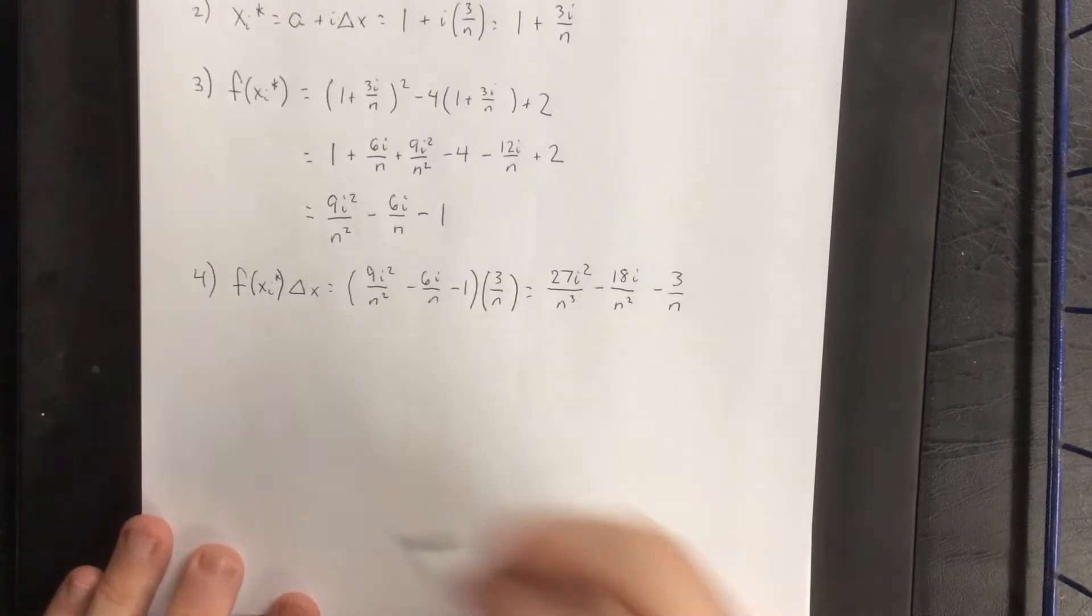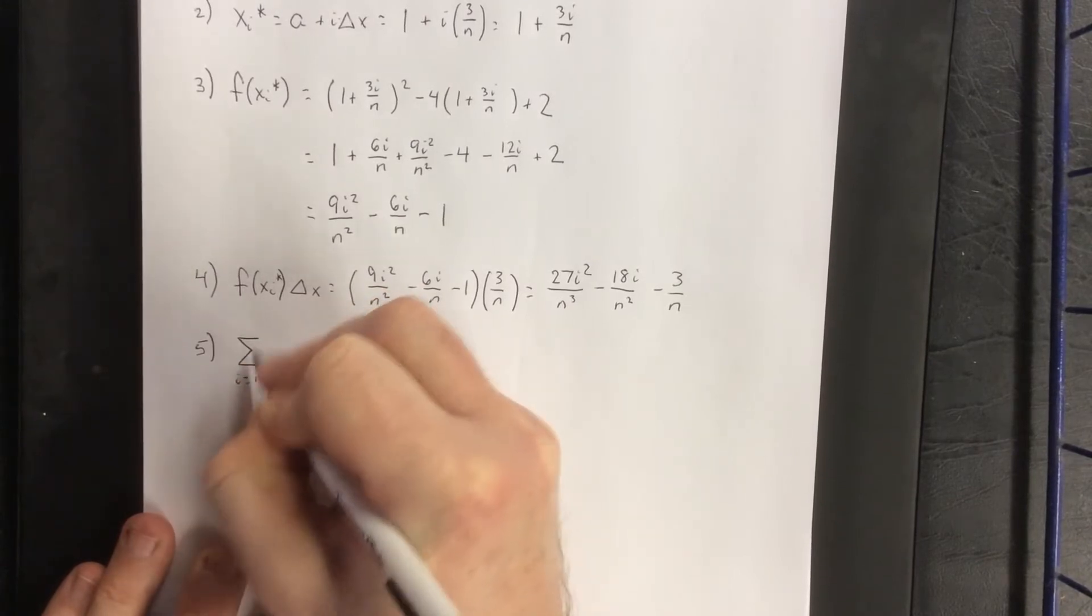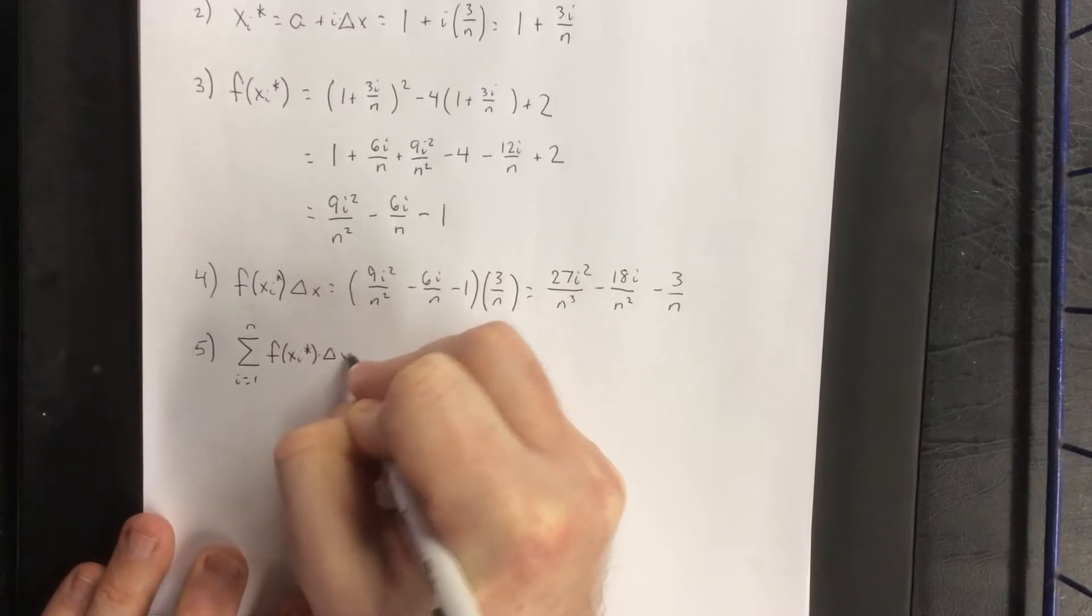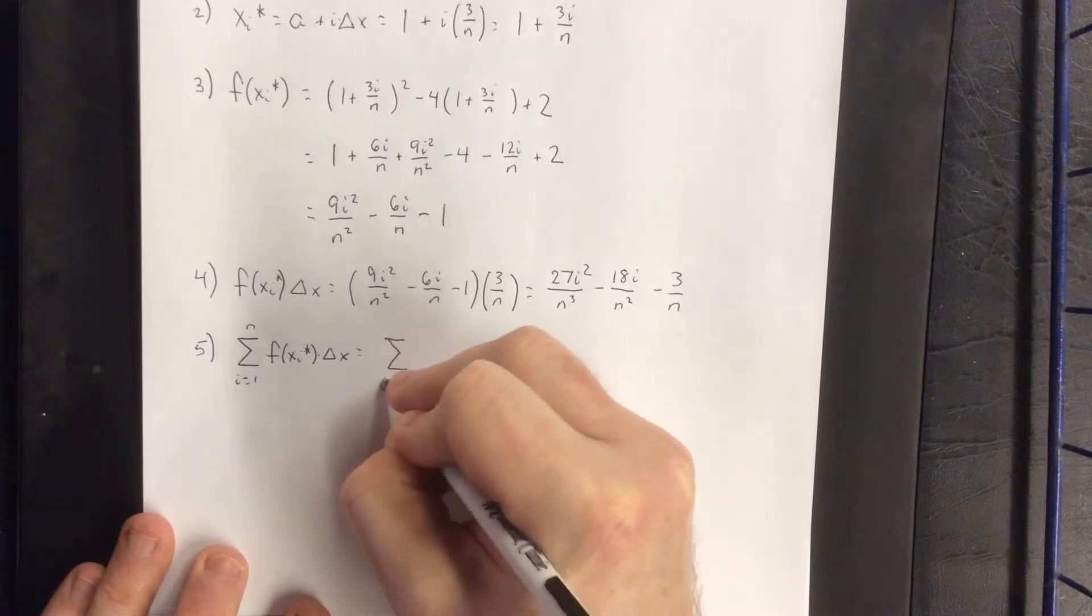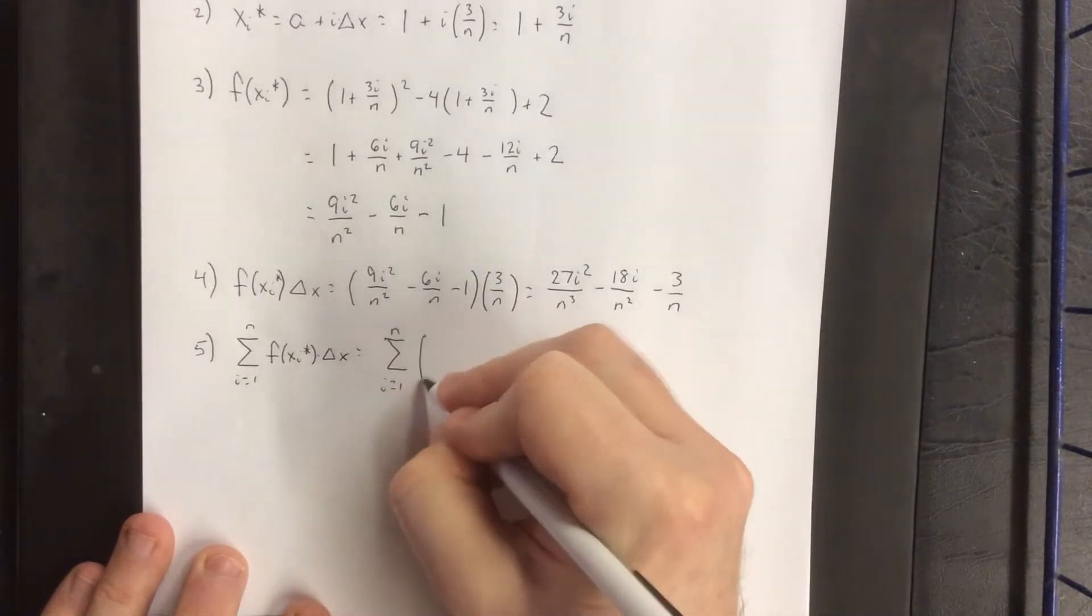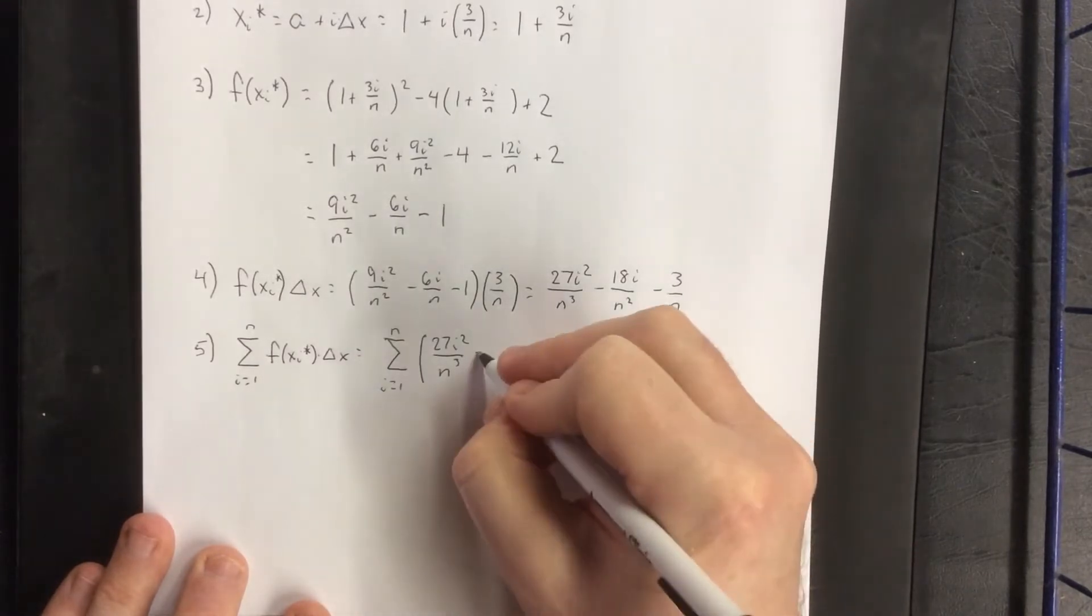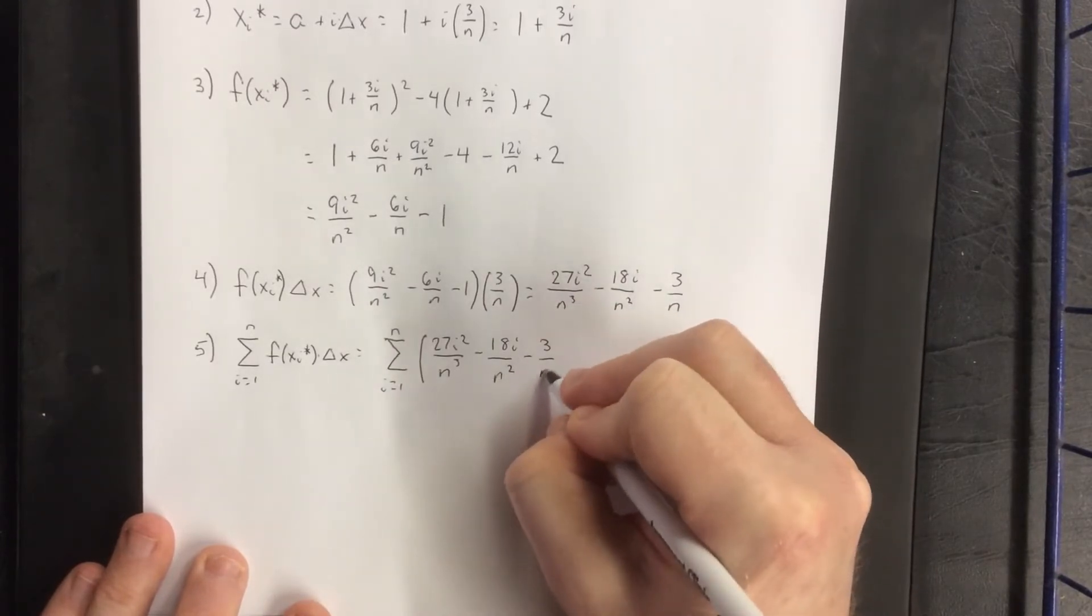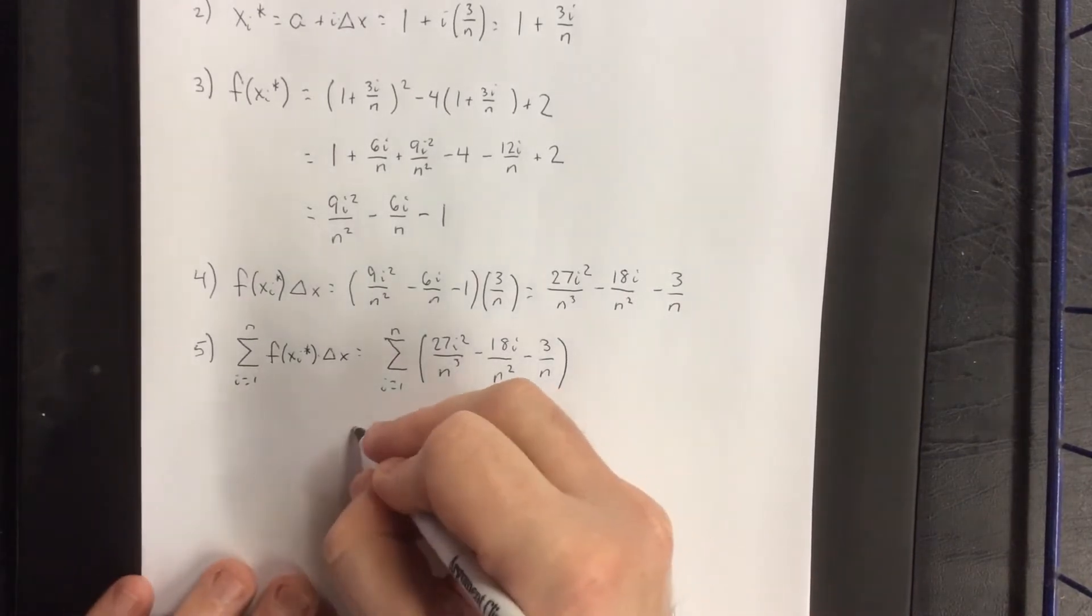Next up, we will be summing these. So this will be the sum from i equals 1 to n of f of x sub i star times delta x. So apply the summation to each of these. This is where we're going to be using some properties of the summations that were listed in our first video of the playlist. First off, anywhere that I see an addition or a subtraction, I can split into multiple summations.